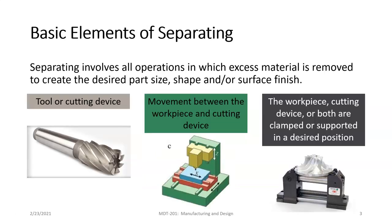In all of these separating processes, the basic elements are that we will need a tool or cutting device. We will need some type of movement between the workpiece and the cutting device. The workpiece is the part, the object, the thing that we are going to be cutting or separating parts from, removing material from. There has to be movement between the cutting device and the workpiece. The third basic element is that the workpiece, the cutting device, or both are going to be clamped or supported in some type of desired position.